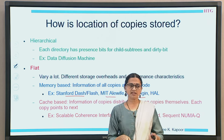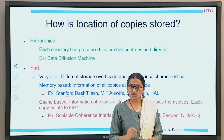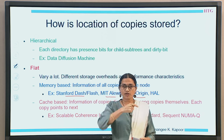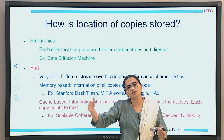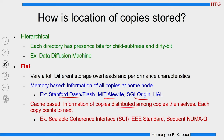The other variant of flat is the cache-based, where instead of memory keeping the information, every individual cache keeps information about the sharers. A block in the cache must know which other nodes are sharing it. We establish a kind of linked list between cache blocks across the whole system to keep track of the different sharers. The SCI IEEE standard and the Sequent NUMA-Q architecture implement the cache-based approach. We will study the cache-based using the Sequent NUMA-Q and the memory-based using the SGI Origin protocol as case studies.